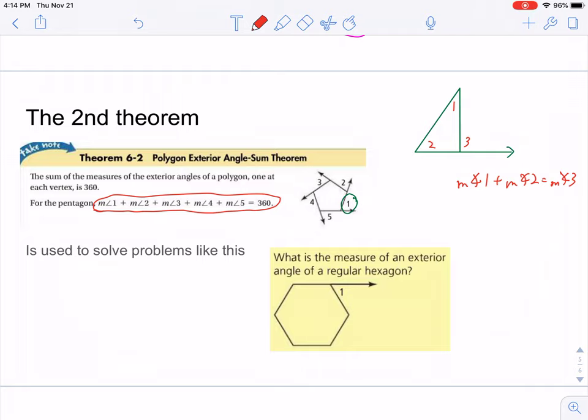So, in this case, when we have to find the measure of an exterior angle, we'll know that there's going to be six numbers that add up to 360. And, since it's a regular hexagon, all the angles are congruent.